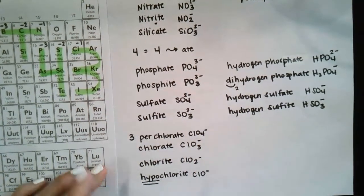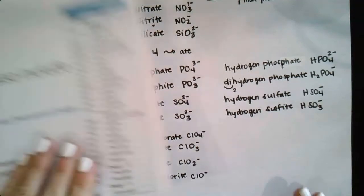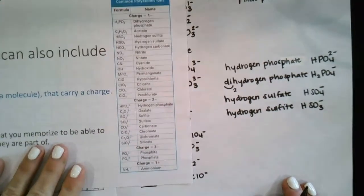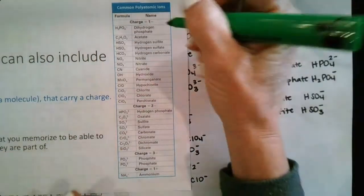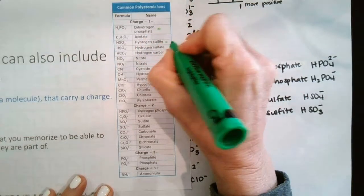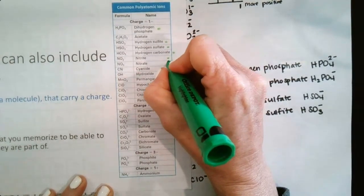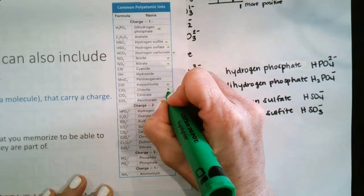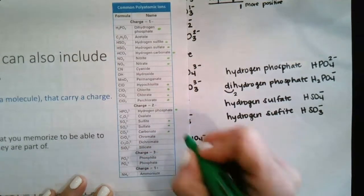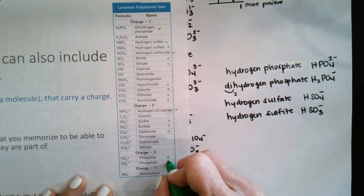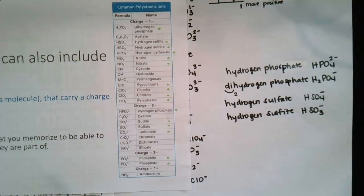So at this point, we have done so many of these polyatomic ions. So what we're going to do is I'm just going to take a second, and we're going to go through all of the ones that we have already determined from the periodic table. Dihydrogen phosphate, we got hydrogen sulfate, hydrogen sulfite, hydrogen carbonate, nitrate, and nitrite, hypochlorite, chlorite, chlorate, perchlorate, hydrogen phosphate, sulfite, sulfate, carbonate, phosphite, and phosphate. All of those are handled just in this one setting.